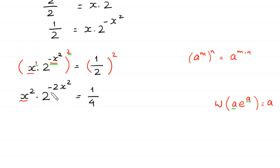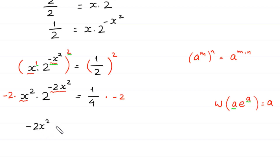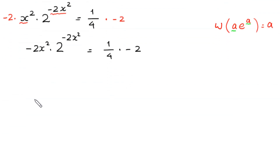Now we have x squared here and negative 2x squared there. To make this x squared match the negative 2x squared, we multiply both sides of this equation by negative 2. On the left side, we get negative 2 times x squared times 2 to the power negative 2x squared is equal to 1 over 4 times negative 2.